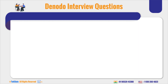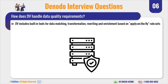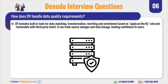Moving to the next question: how does DV handle data quality requirements? Data virtualization includes built-in tools for data matching, transformation, rewriting, and enrichment based on on-the-fly rule sets, extensible with third-party tools. It can track source changes and data lineage. For example, as a Denodo developer, if you want to use a data source whose data type is not defined, there are built-in features in the Denodo platform that can help identify the data type by matching it against different types.